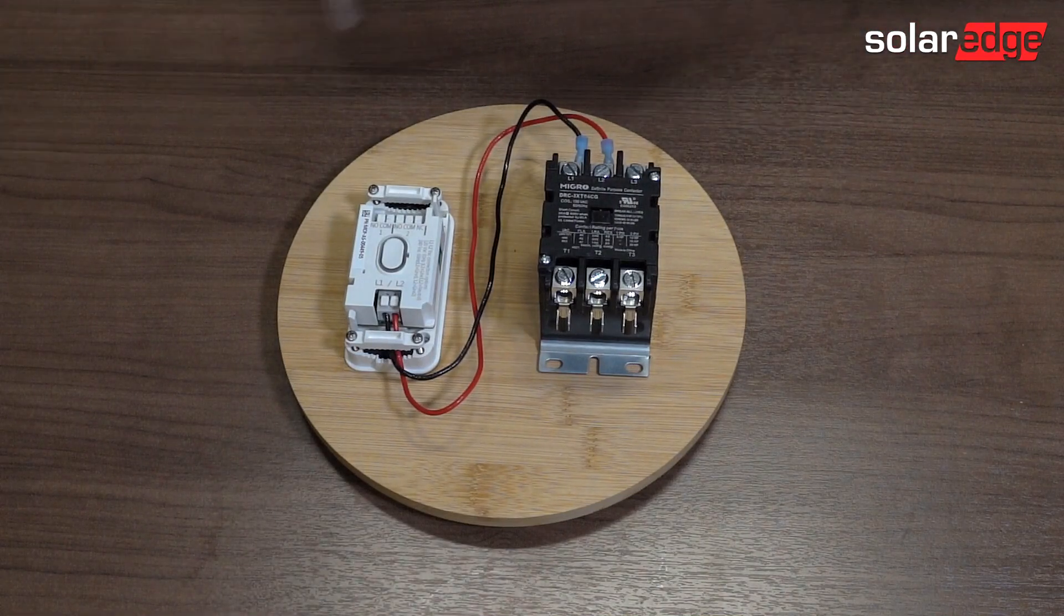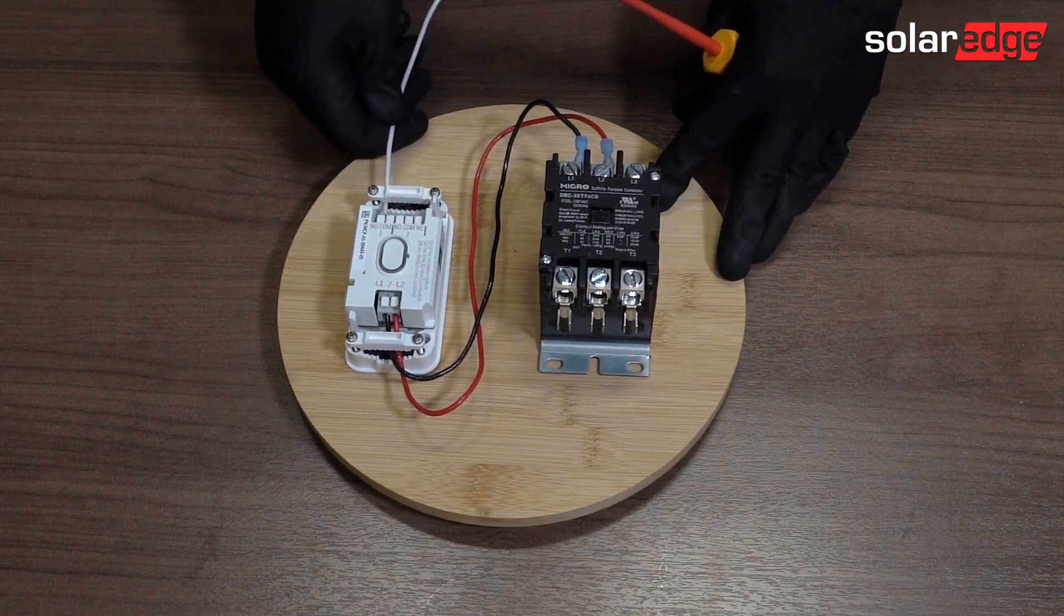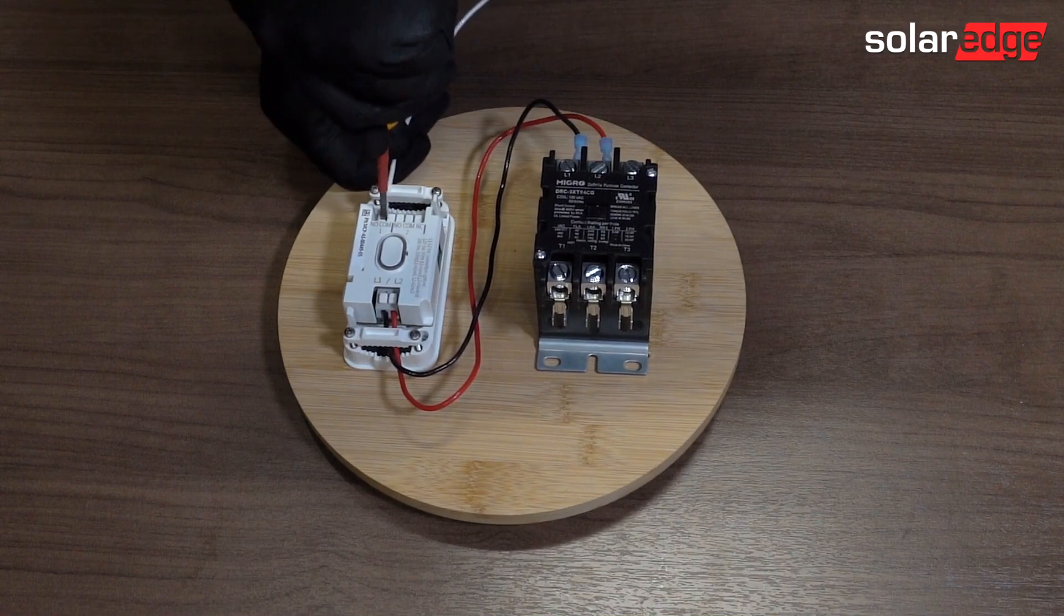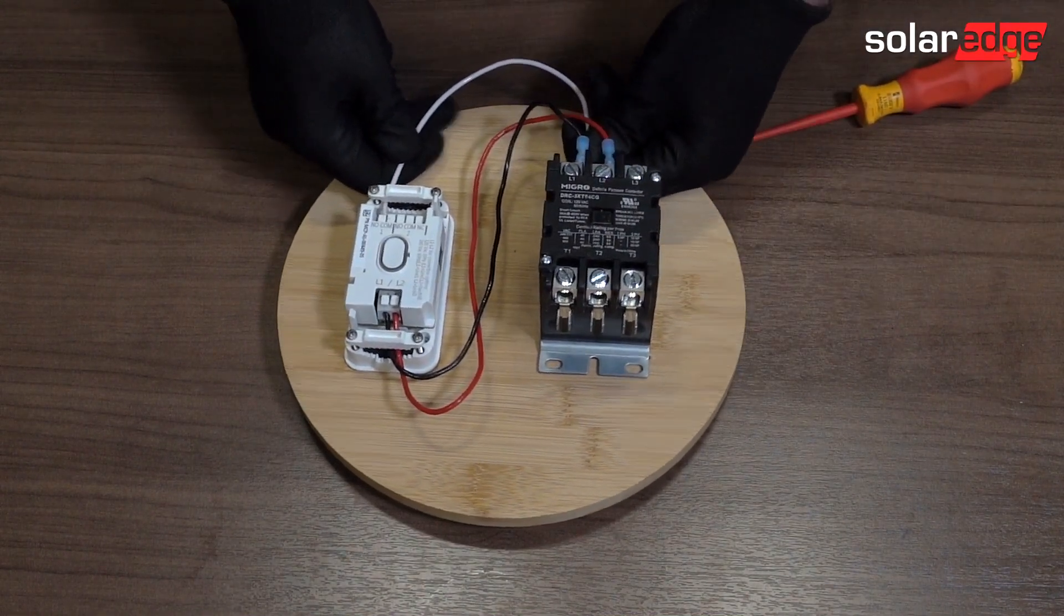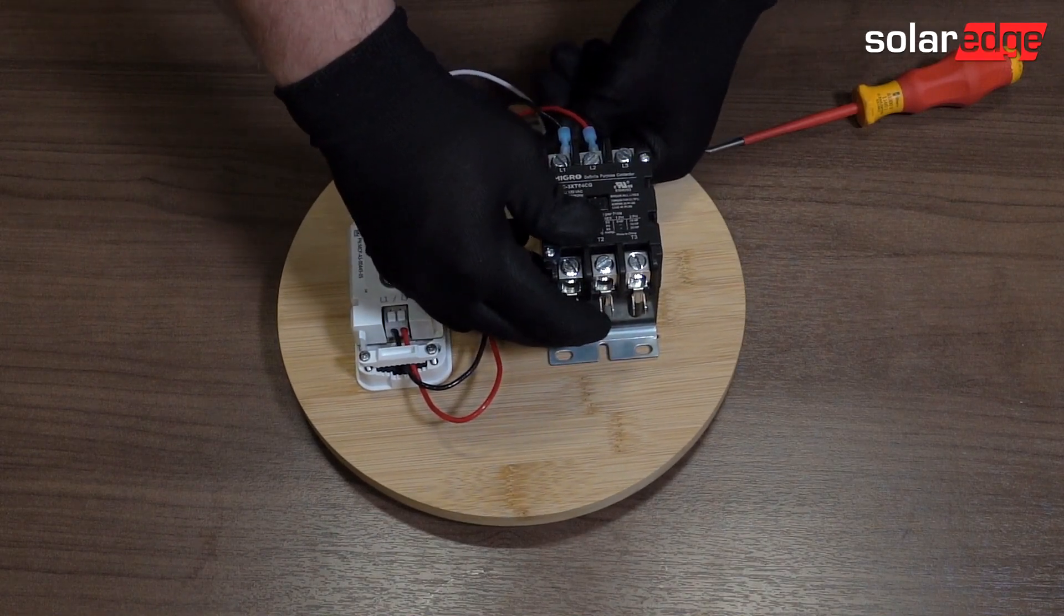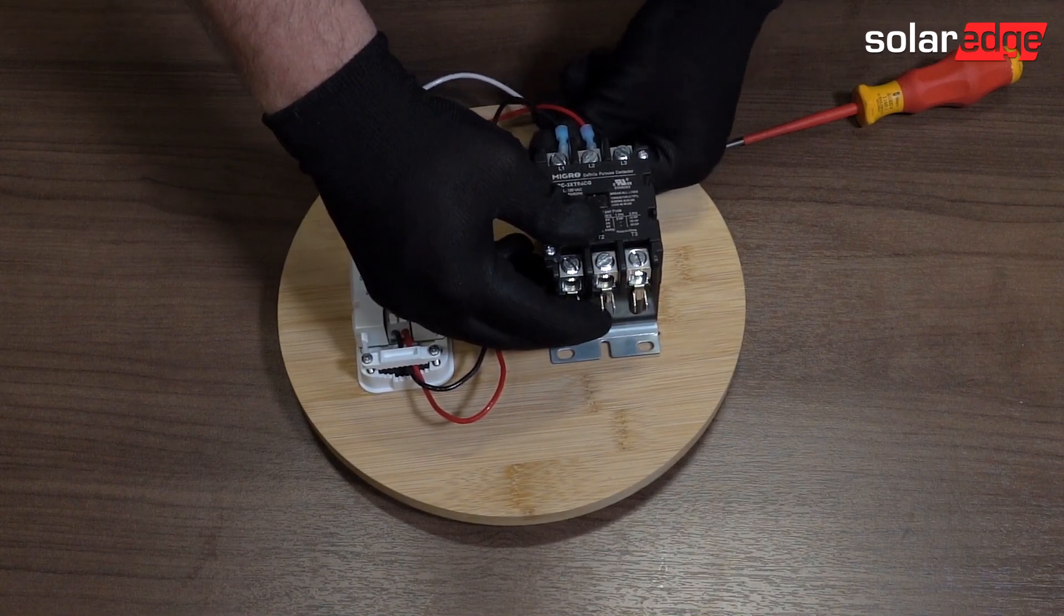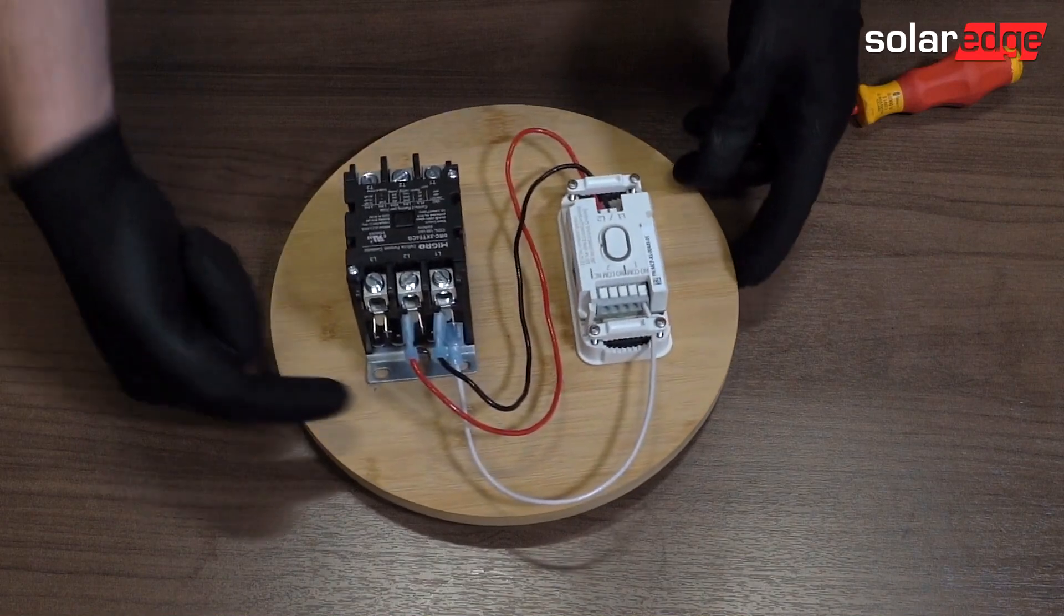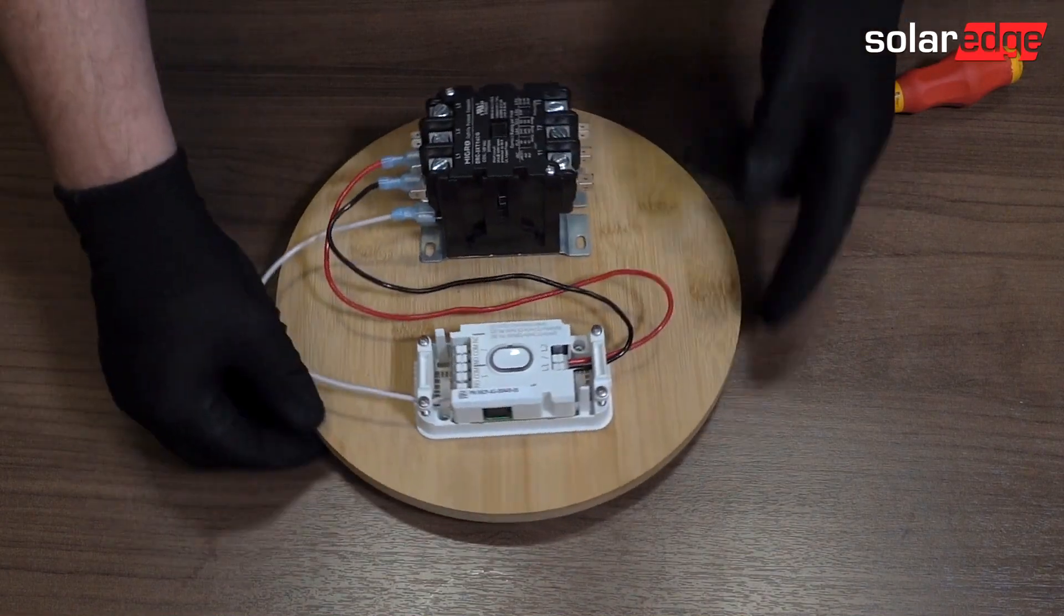So let's do our normally open first. I'm going to use a white wire because this is a 120 volt coil, and I'm going to run a neutral to my coil. We're going to land here at the bottom into the A1 position. Come on. I'm going to give you a little spin so you can see. You can see that's landed on the bottom here on the A1 position, the coil.